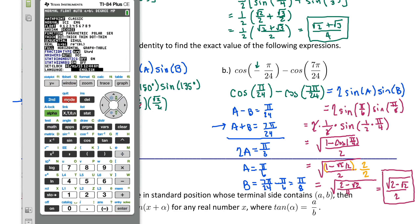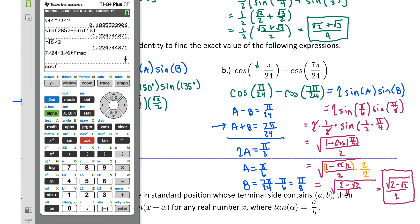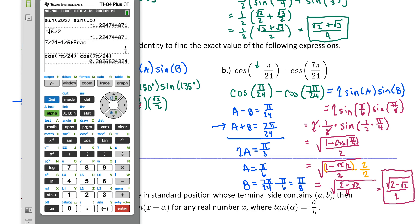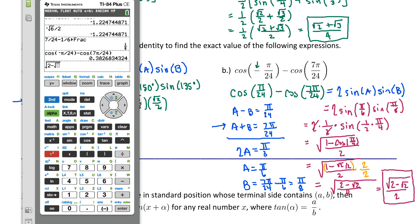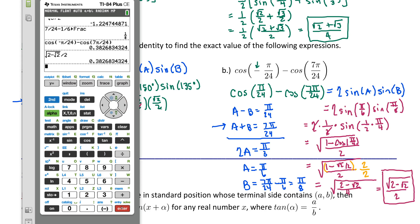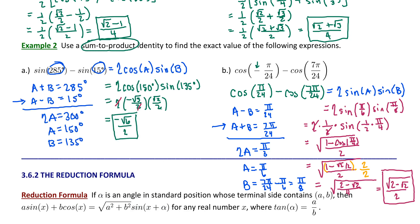This one is definitely worth checking with the calculator. Switching to radian mode, we evaluate the original expression: cosine of negative π over 24 minus cosine of 7π over 24. Then we compute our exact calculation: square root of (2 minus square root of 2), all divided by 2. The decimal approximations match — so those are product-to-sum and sum-to-product identities. You don't have to memorize those, but you have to know how to use those formulas.